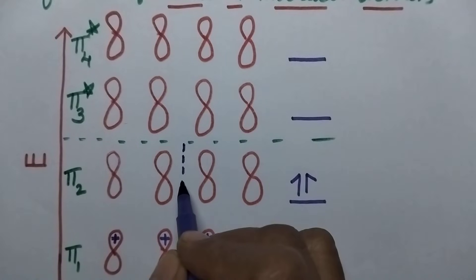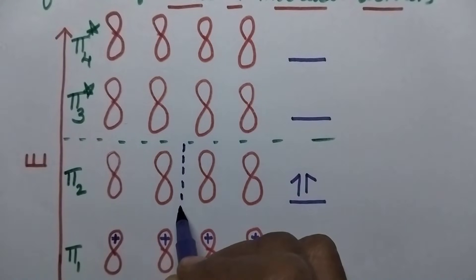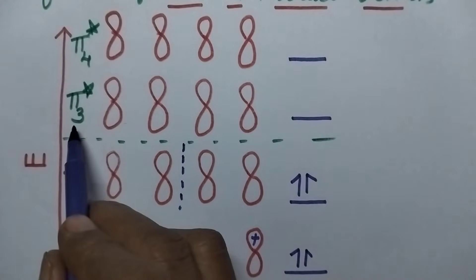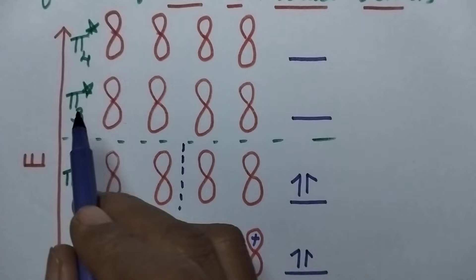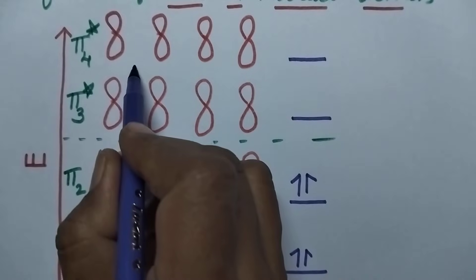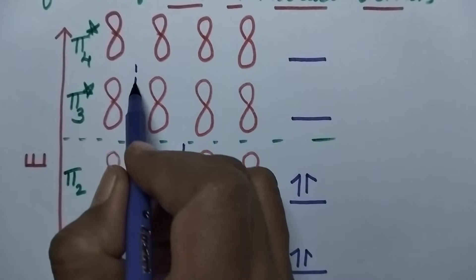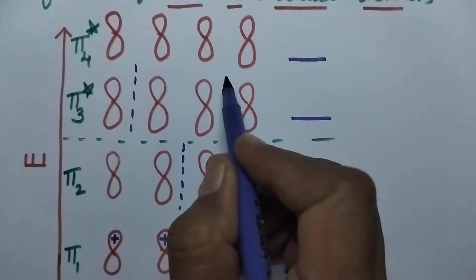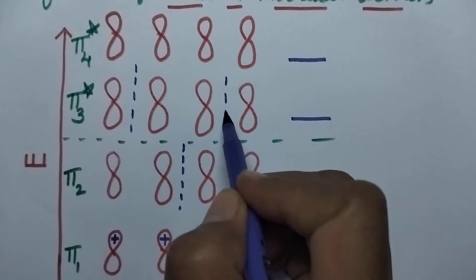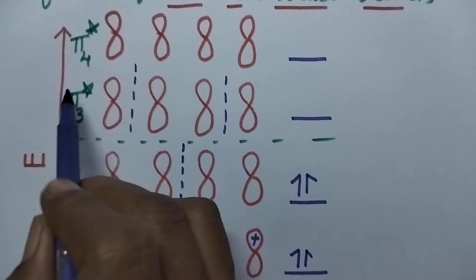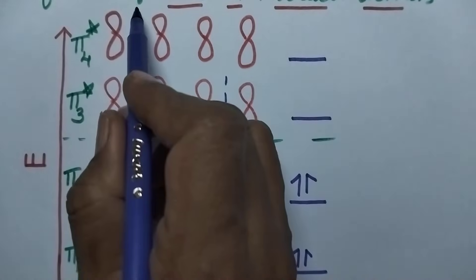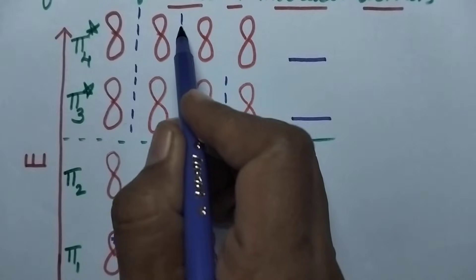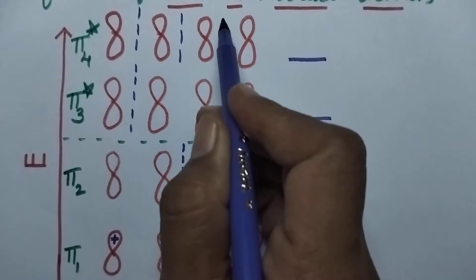Let us suppose it is the nodal plane. Moving to π3*, two nodal planes will be present, and we have to represent them symmetrically. Coming to π4*, three nodal planes will be present.